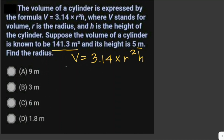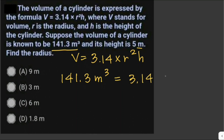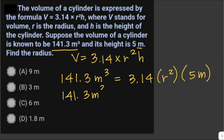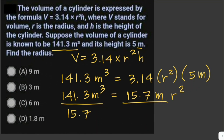We can plug in the given values. Our volume is 141.3 cubic meters, which equals 3.14 times R squared times 5 meters. Then 3.14 times 5 equals 15.7 meters. So 141.3 cubic meters equals 15.7 meters times R squared. To solve for R squared, we divide both sides by 15.7 meters — this cancels out.